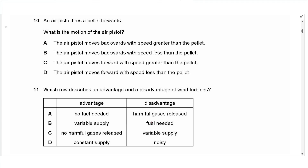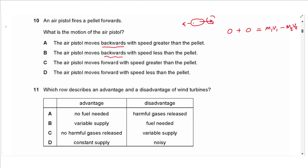Question 10: An air pistol fires a pellet forward. By Newton's third law, the pistol is pushed backwards. Using conservation of momentum, initial momentum is zero. After firing, M1V1 = M2V2 (magnitudes). Since the pistol is much heavier than the pellet, its speed is much less than the pellet's speed. Answer is B.